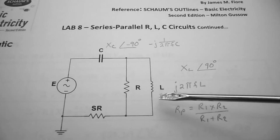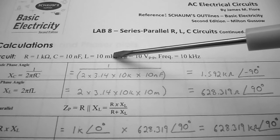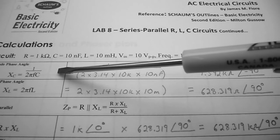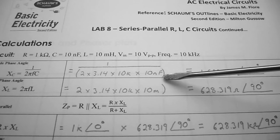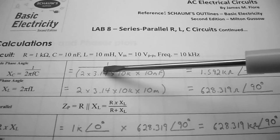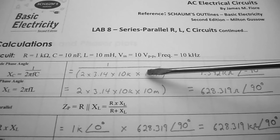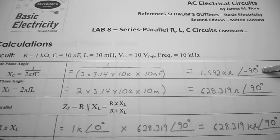The first step is to realize our component values: R is 1k ohms, C is 10 nanofarads, L is 10 millihenries, Vin is 10 volts peak to peak, and frequency is 10 kilohertz. Our first formula is for Xc, which equals 1 over 2πFC. That's 1 over the entire bracket of 2 times π times 10k times 10 nanofarads, and that equals 1.592k ohms at an angle of minus 90 degrees.